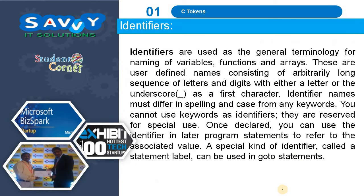The next one is Identifiers. Identifiers are used as the general terminology for naming of variables, functions and arrays. These are user-defined names consisting of an arbitrary long sequence of letters and digits with either a letter or the underscore as the first character. Identifier names must differ in spelling and case from any keywords. You cannot use keywords as identifiers, as they are reserved for special use. Once declared, you can use the identifier in later program statements to refer to the associated value.